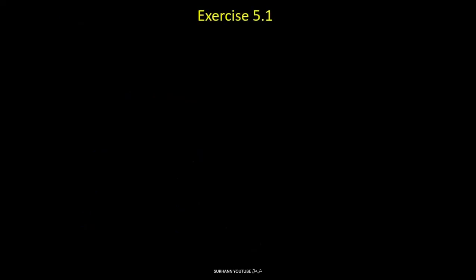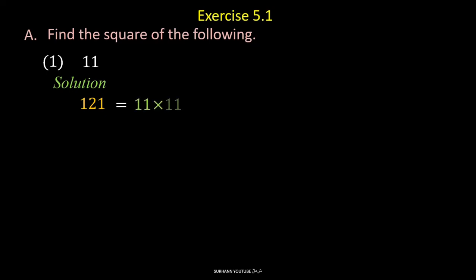Now we start exercise 5.1, question number A: Find the square of the following. Problem number 1 is 11. So 121 is the square of 11, because when you multiply 11 two times, you will get the square of 11. Now similarly solve all other problems of this question by yourself. And please subscribe my YouTube channel.